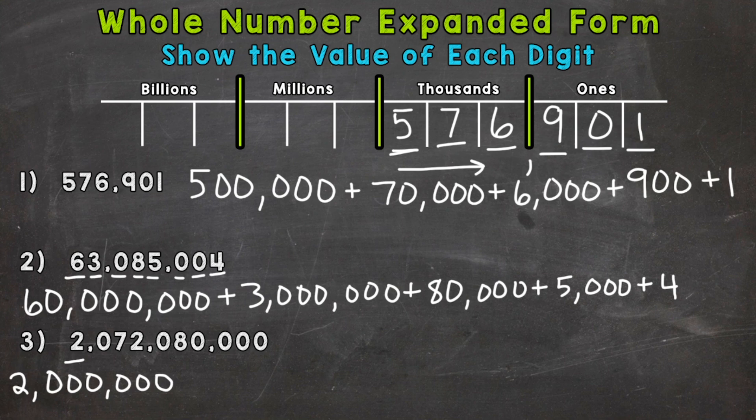We have a zero in the hundred million. So we can go to the 10,000,000 where we have a seven worth 70,000,000. Plus 2,000,000 here, a two in the millions place.